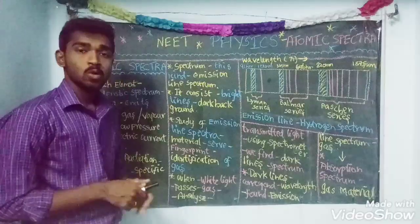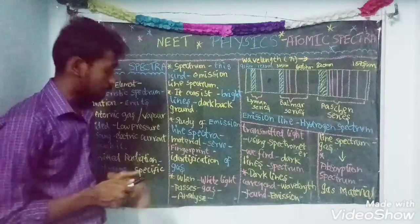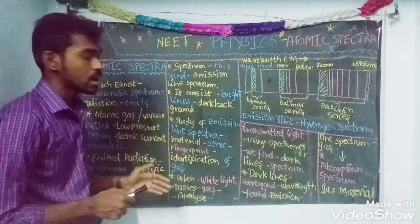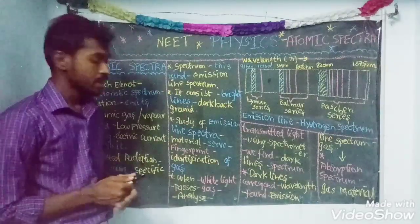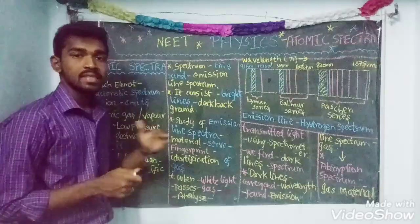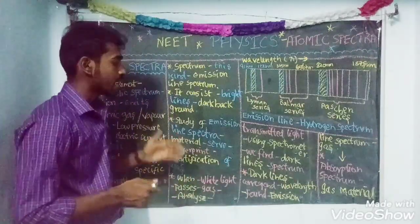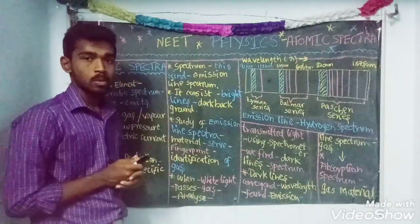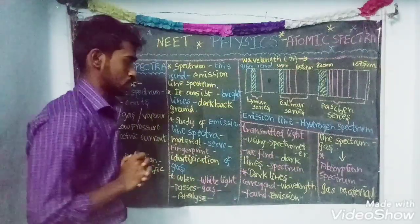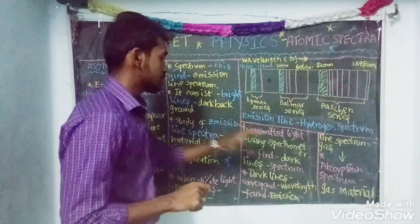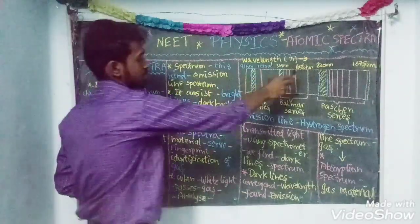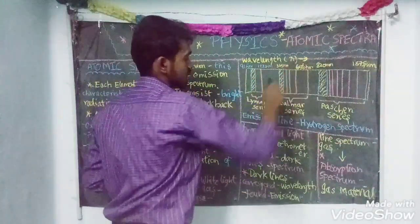When white light is passed through the gas, we will analyze the transmitted light. We will analyze the gas and find dark lines on the spectrum.